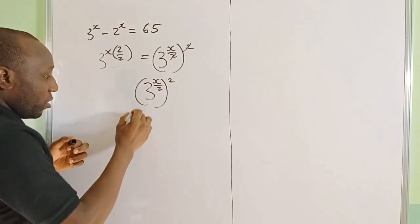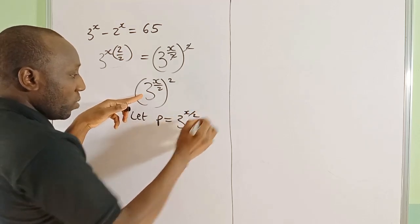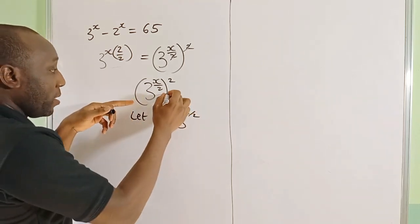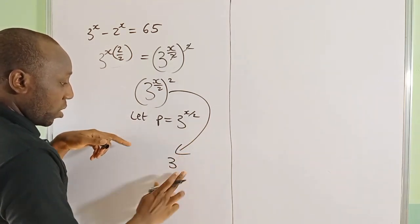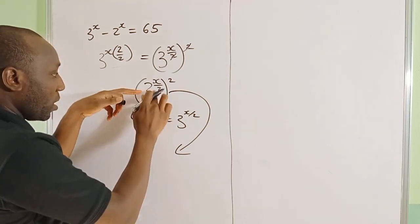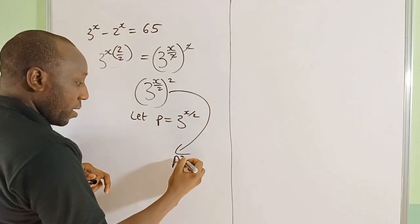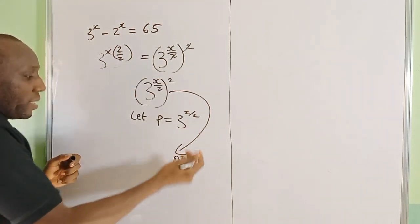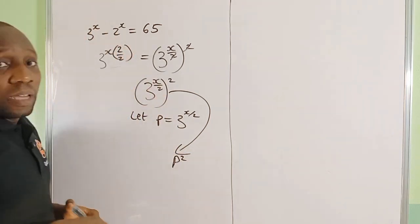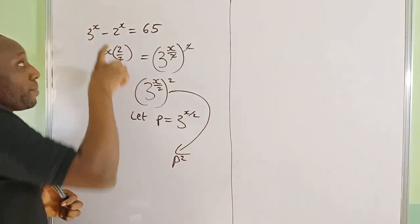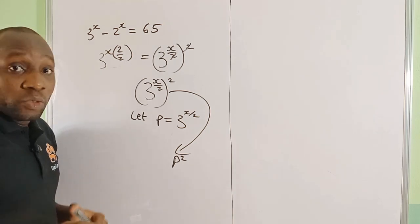So I can say let p be equal to 3 raised by x over 2. Then the whole term 3 raised by x becomes p squared, because 3 raised by x/2 is now p. That's how I was able to bring a square from this exponential equation, and I'll do the same thing to 2 raised by x. Let's start again and have everything well sorted out.